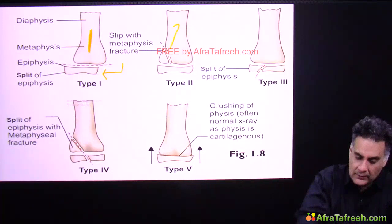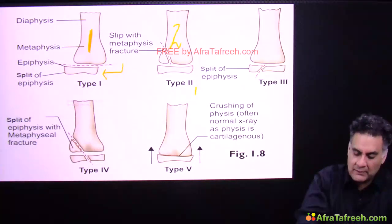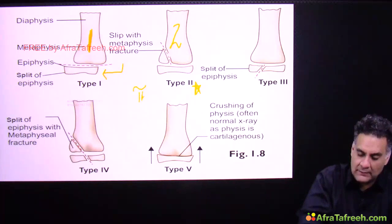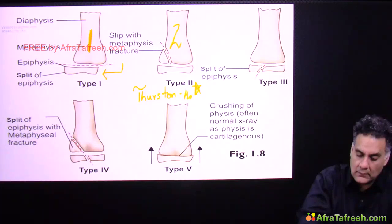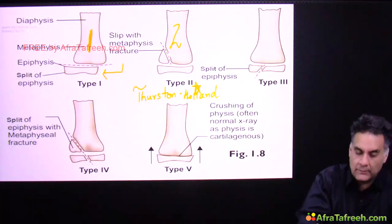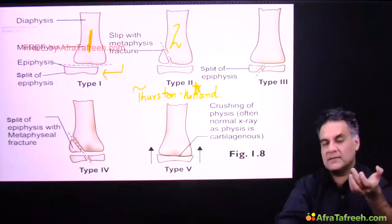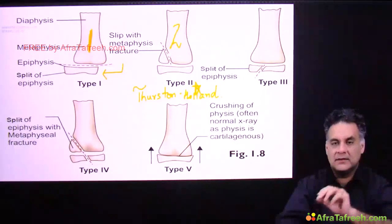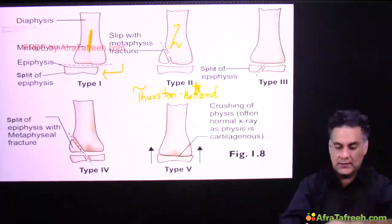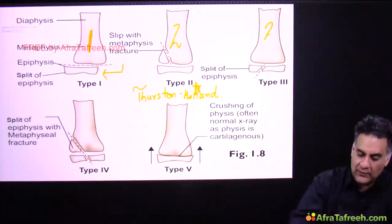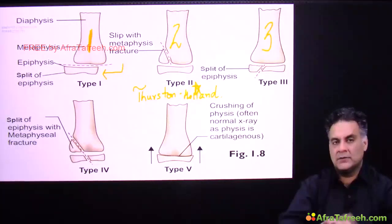Type 2 is the commonest type. It is also called the Thurston Holland type — they will commonly ask you this. Salter Harris type 3 is a split of the epiphysis into two parts.